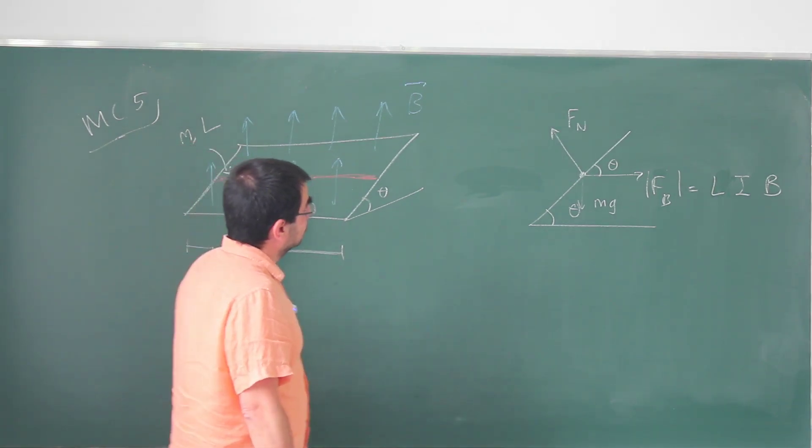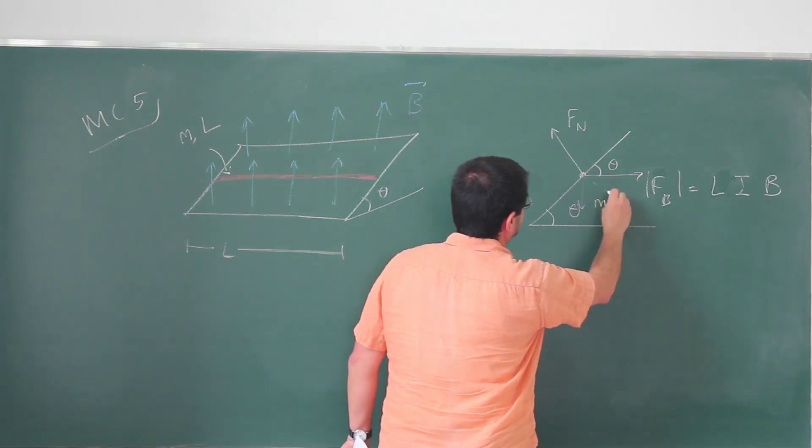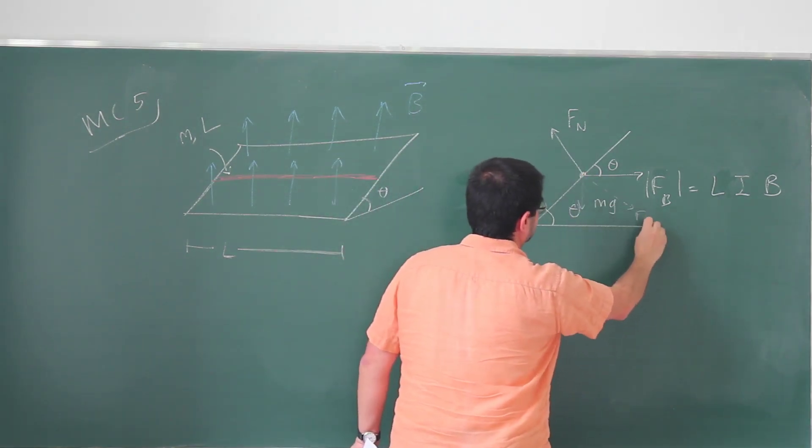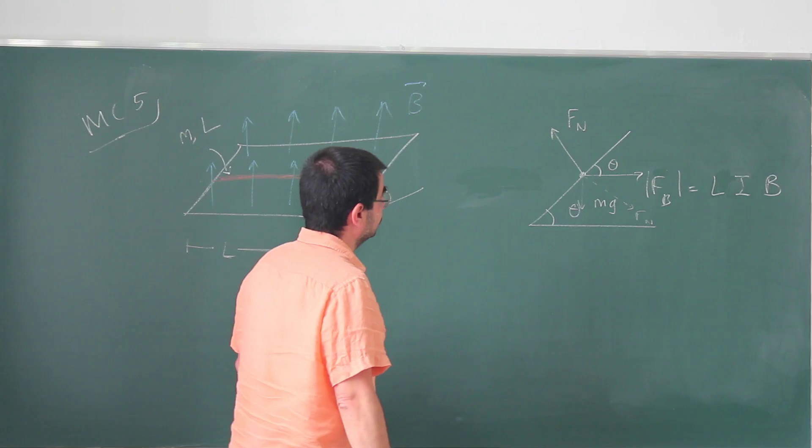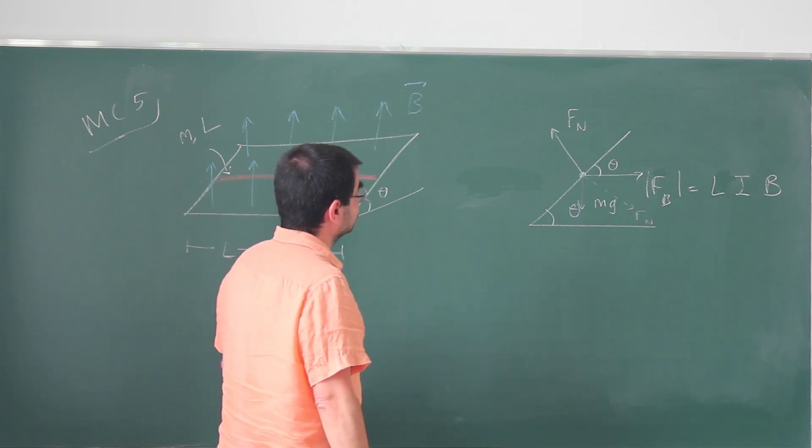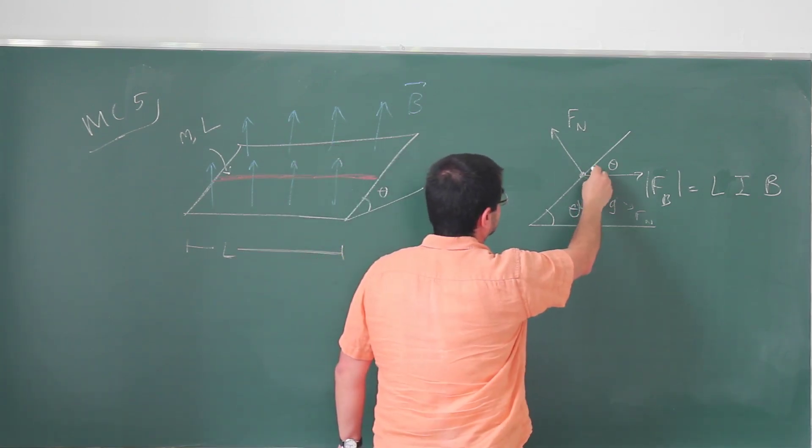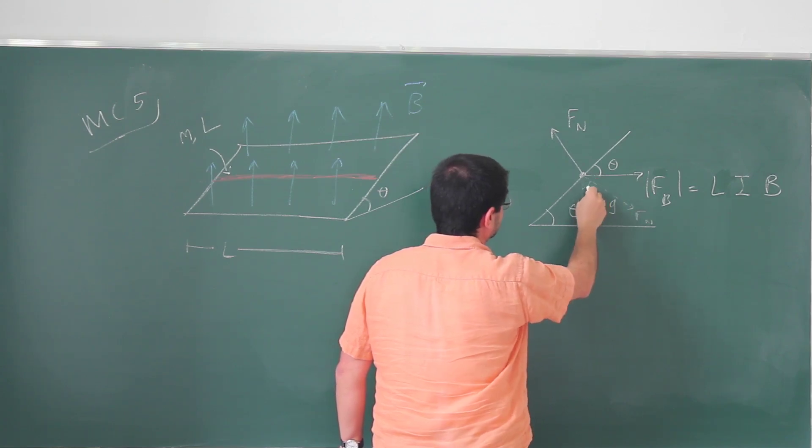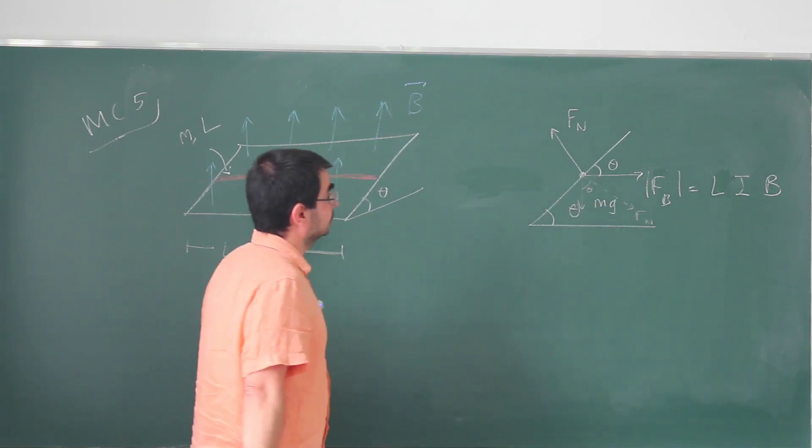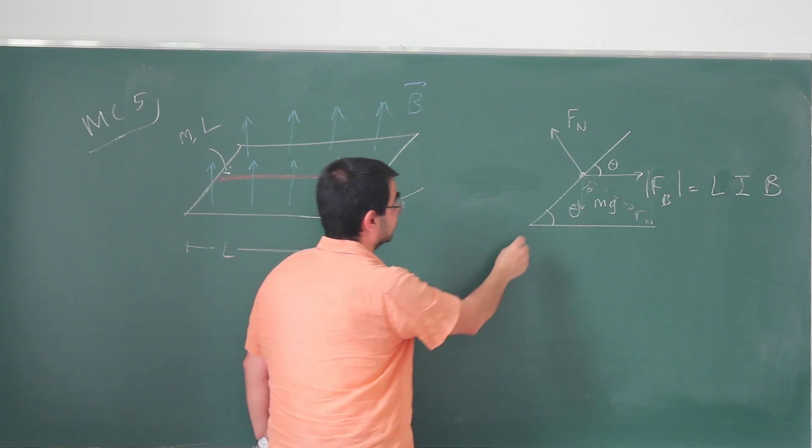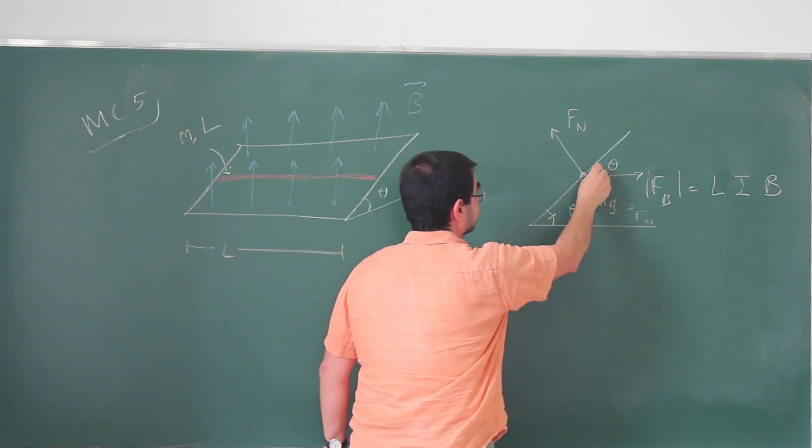Normal force is going to, the opposite to normal force, is going to look like this. So this is theta, this is 90 degrees. So this is also theta. In this diagram, I hope this can be seen. But this angle, this angle, and this angle, they are all the same.